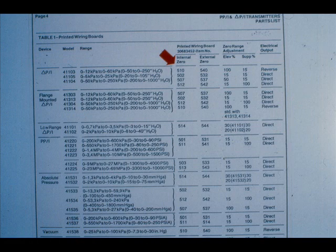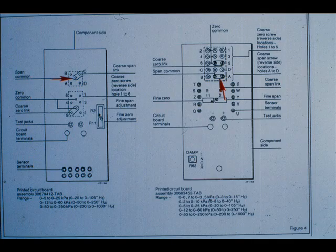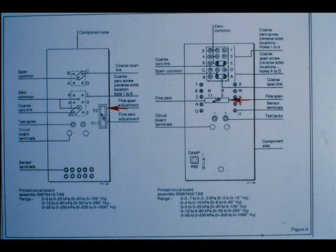This table from the instruction manual gives the different circuit board numbers. The four coarse span adjustments are located here, and this is the fine span adjustment.